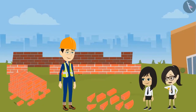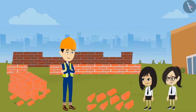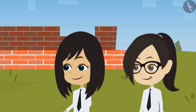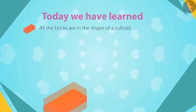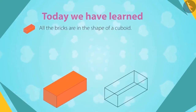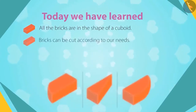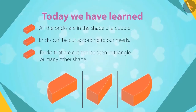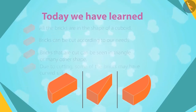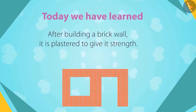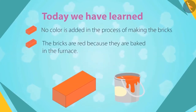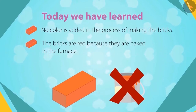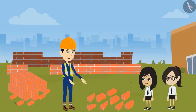Now I understand — I was thinking why they don't make colorful bricks! We have to go now, sir — our class is about to start. Sure, but first let's recall what you have learned today. All bricks are in the shape of a cuboid, which can be cut according to our needs — that is why we see bricks of other shapes like triangles and some with curved sides. After building a brick wall, the wall is plastered to give it strength. No color is added in the process of making bricks — the bricks are red because they are baked in the furnace. Very good, Neha and Vandana. Now I think both of you know everything about bricks.